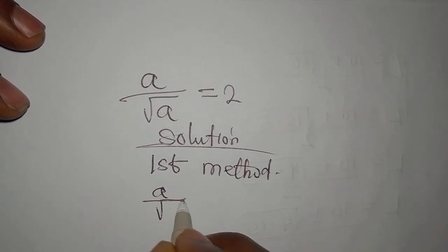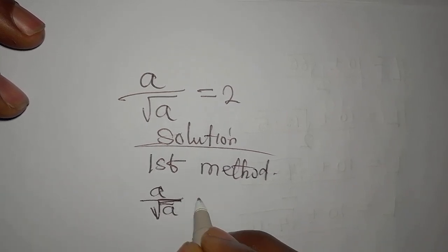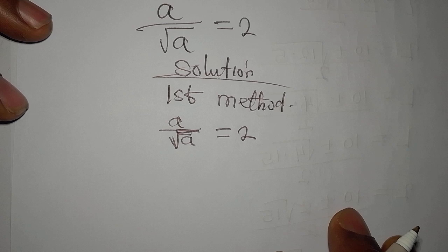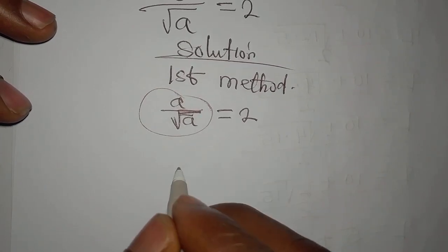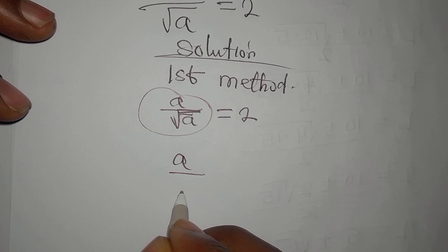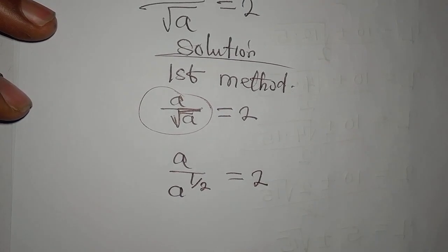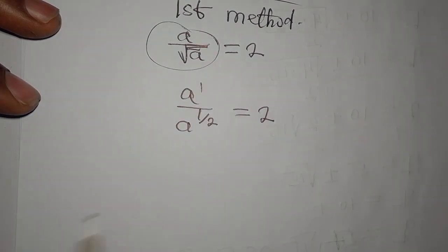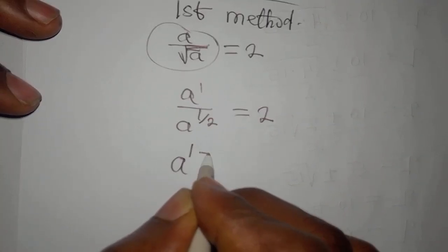a over square root of a equals 2. Now I want to deal with what I have on the left. This is a over a to the power of 1/2 equals 2. Now this a has power of 1, so if I pick a then I have to subtract the powers because this is division, and this equals 2.